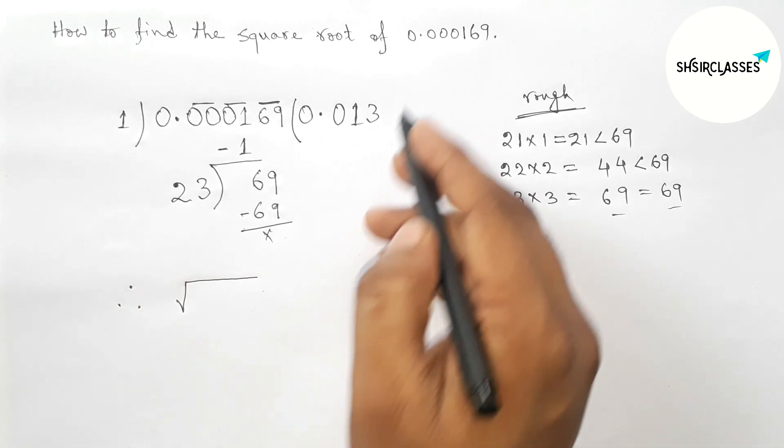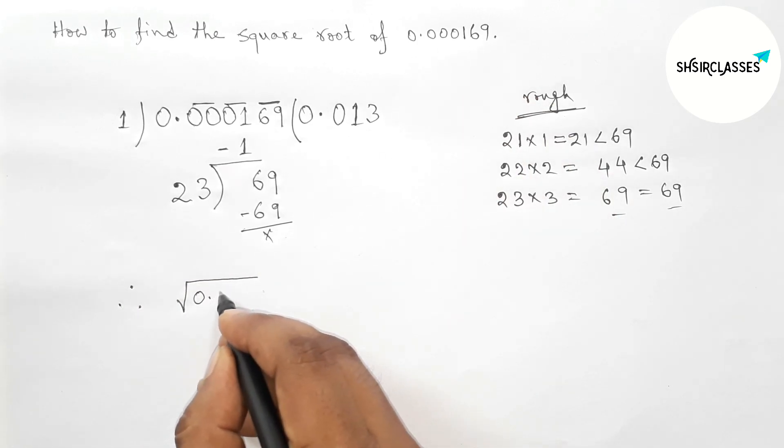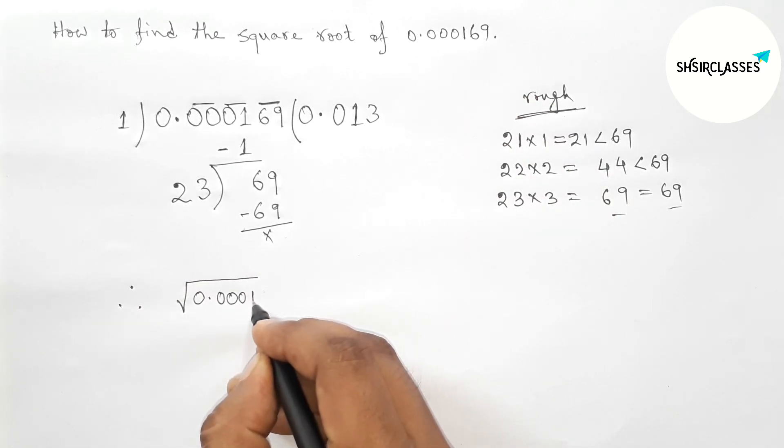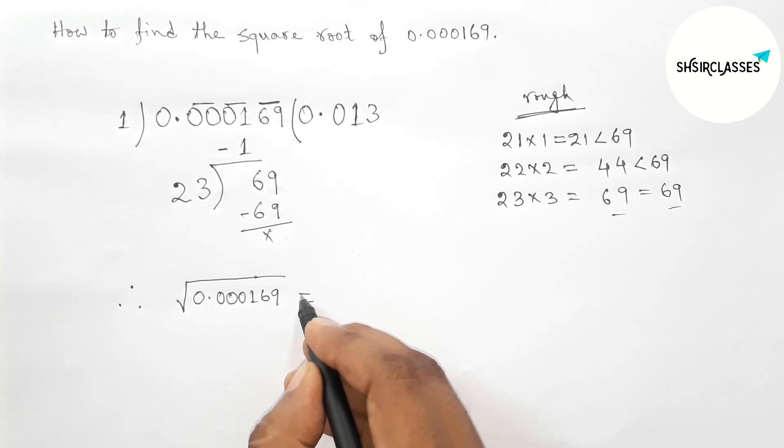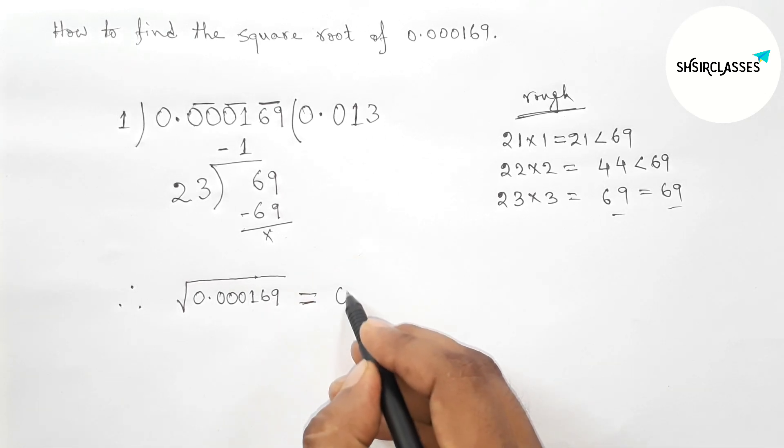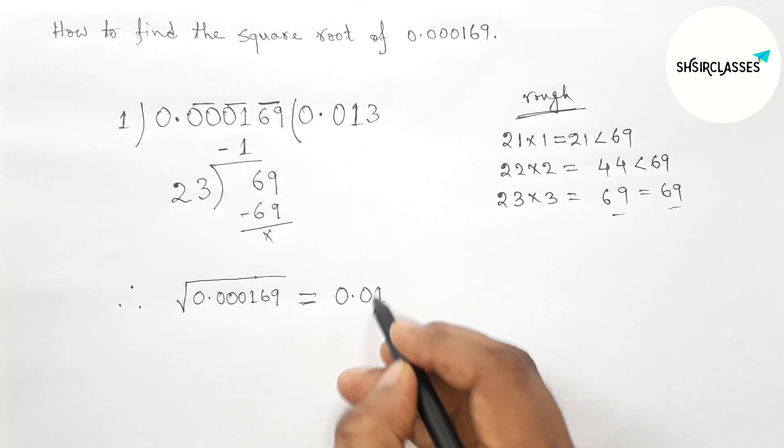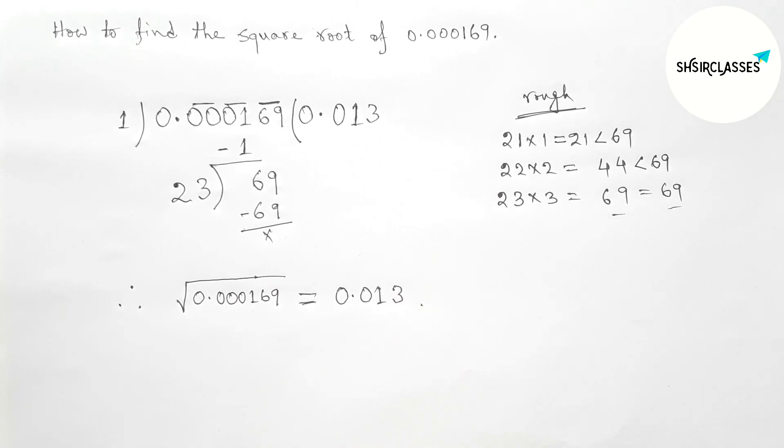The square root of 0.000169, so root over 0.000169 equals this: 0.013. So that's all. Thanks for watching, please see.